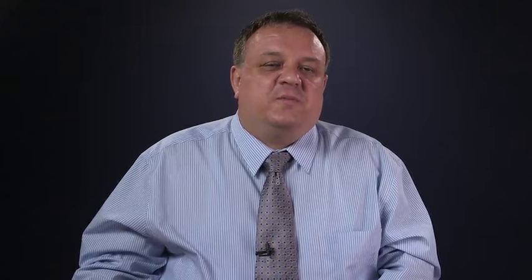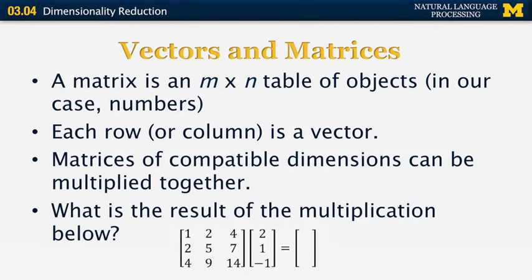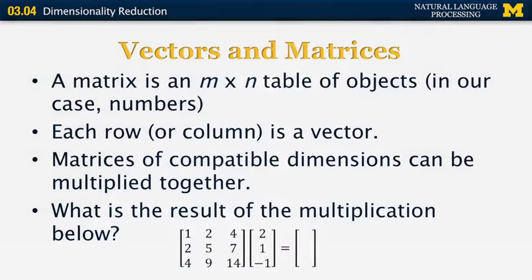So what we really did here was to reduce the dimensionality of our data set from two dimensions to one dimension. How is this done in practice? Let's go back to a little bit of linear algebra. We need to remember how vectors and matrices work in order to understand dimensionality reduction. A matrix is an n by n table of objects — in our case, those objects are numbers. Each row and also each column of a matrix is a vector. Matrices of compatible dimensions can be multiplied together. If you don't remember this kind of math, you should visit a website that explains how to multiply matrices, then come back and try to multiply the two matrices in the example below.